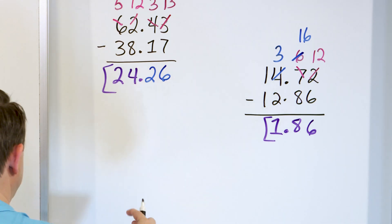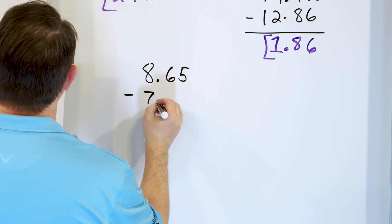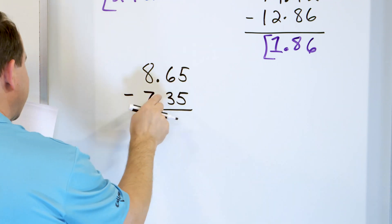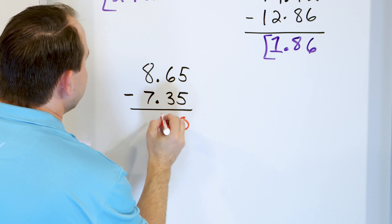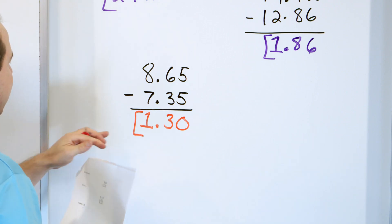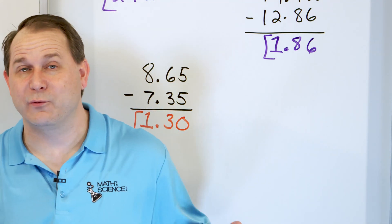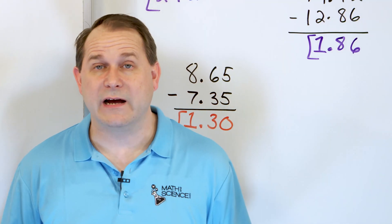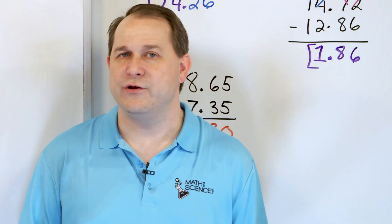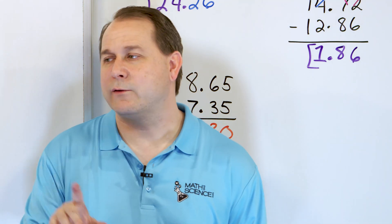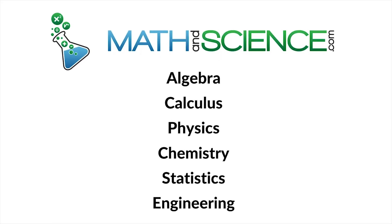You can think of decimals as being money if it helps you remember what we're doing here. Last problem: 8.65, and we'll subtract from that 7.35 — think of it as $8.65 minus $7.35. 5 minus 5 is 0. 6 minus 3 is 3. 8 minus 7 is 1. And the decimal comes right down, so the answer is 1.30, or $1.30. So subtracting decimals to hundredths is really important — line up the decimal points, do the subtraction, then drop the decimal into your answer. That concludes part one. When you feel like you're getting the right answers, follow me to part two for more practice on subtracting decimals to the hundredths place.